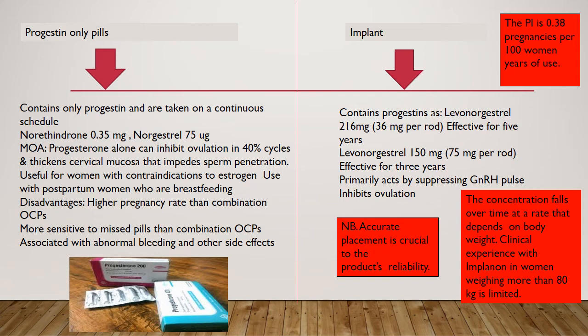The implant has a Pearl index of 0.38 pregnancies per 100 women-years of use. It contains progestogen such as levonorgestrel — either 216 mg in the 5-year regime or 150 mg in the 3-year regime (75 mg per rod). It primarily acts by suppressing the GnRH pulse and inhibiting ovulation. Accurate placement is crucial to reliability and concentration falls over time at a rate dependent on body weight. Clinical experience with Implanon in women weighing more than 80 kg is, however, limited.